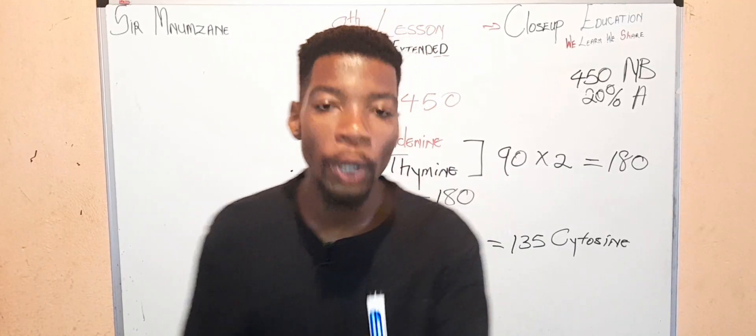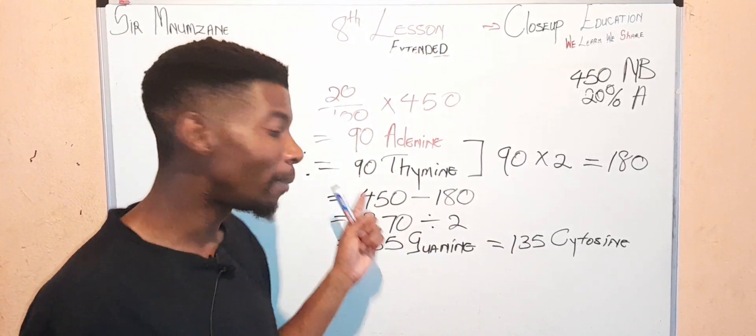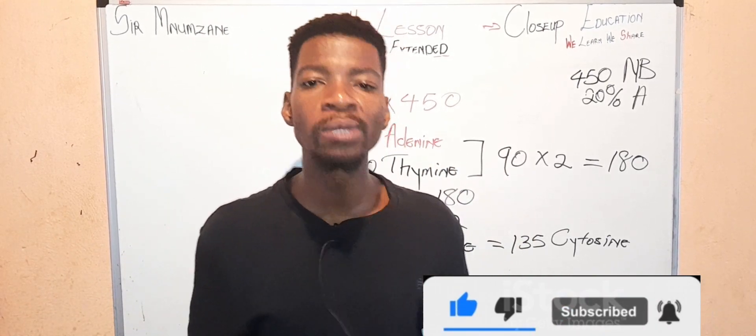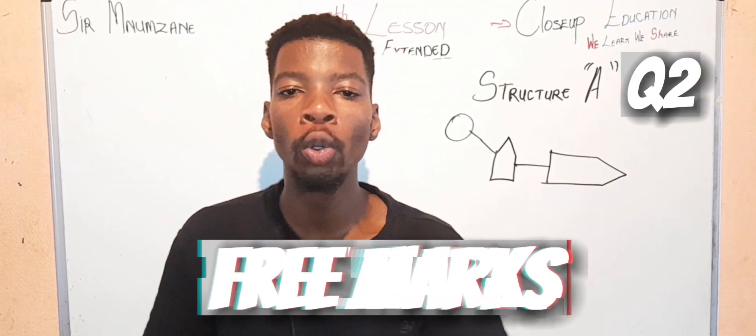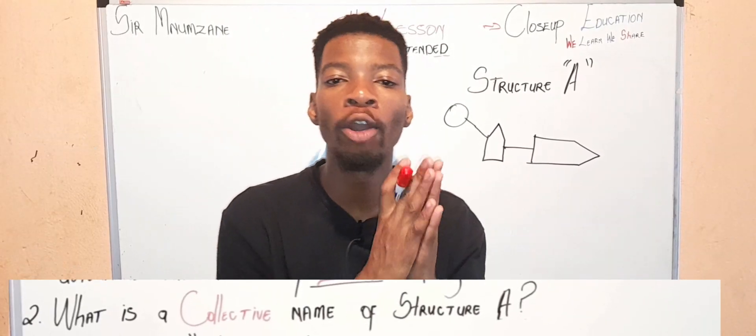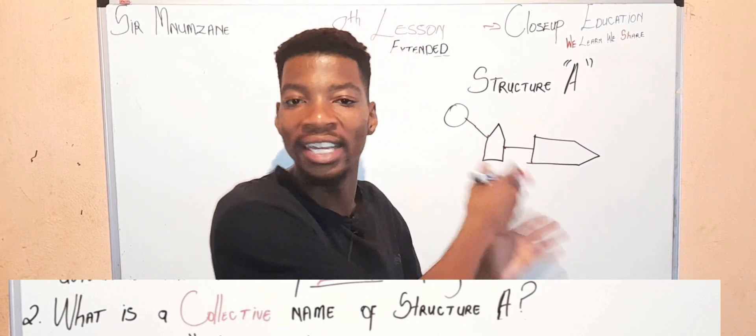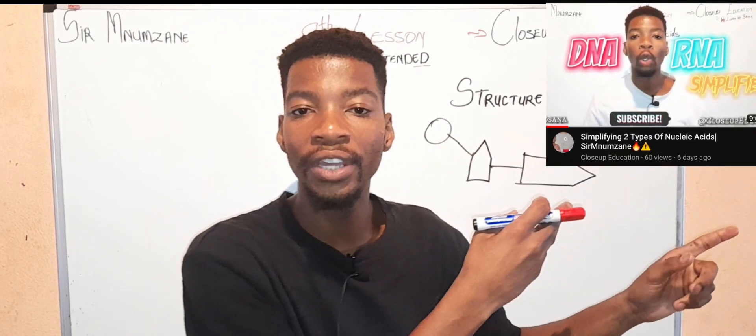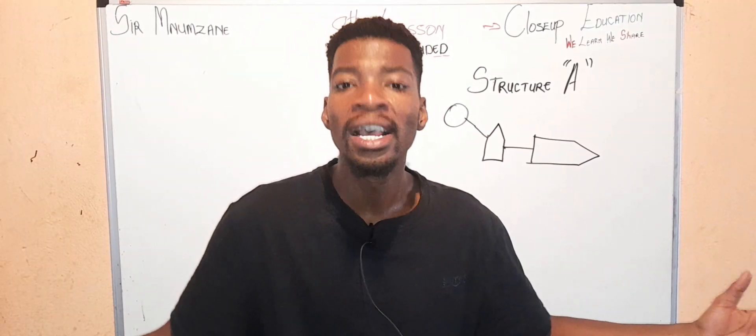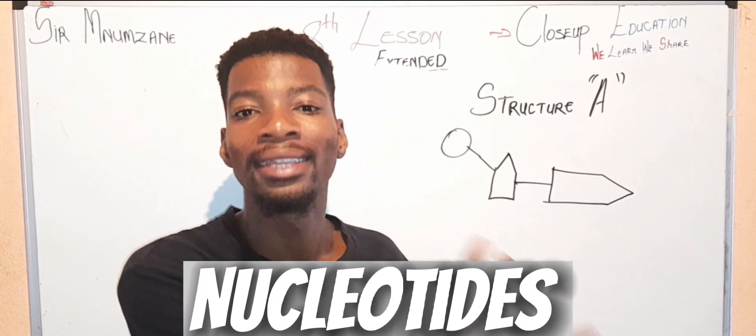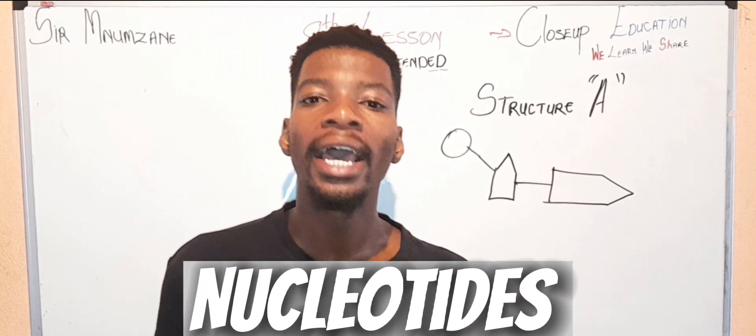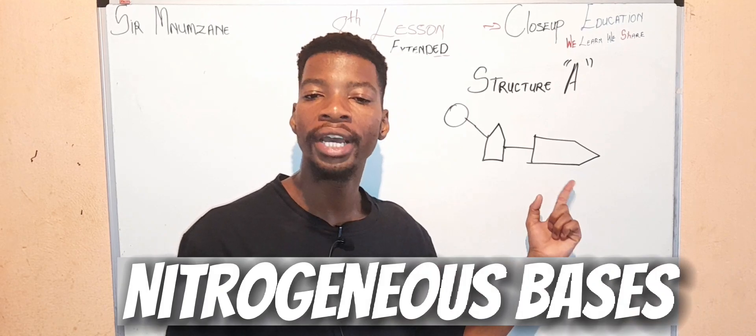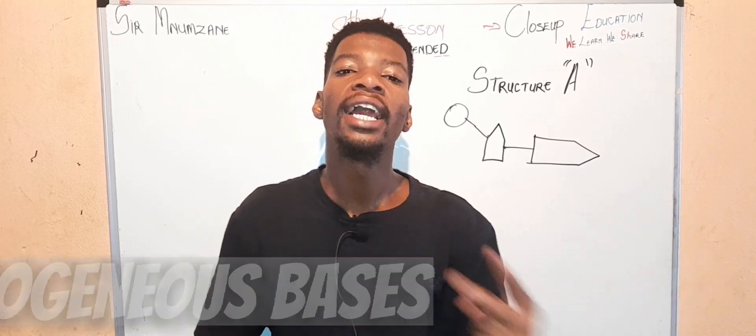Now we know that there are 90 adenine, 90 thymine, 135 guanine, and 135 cytosine. Let's move to question number two. Question two, for three marks, determine or name the collective name of the structure. You have to know the structure by now. If you do not know the structure, watch the video I dropped before this one. This is a structure called a nucleotide, which consists of the phosphate group, the sugar, and the nitrogenous bases.